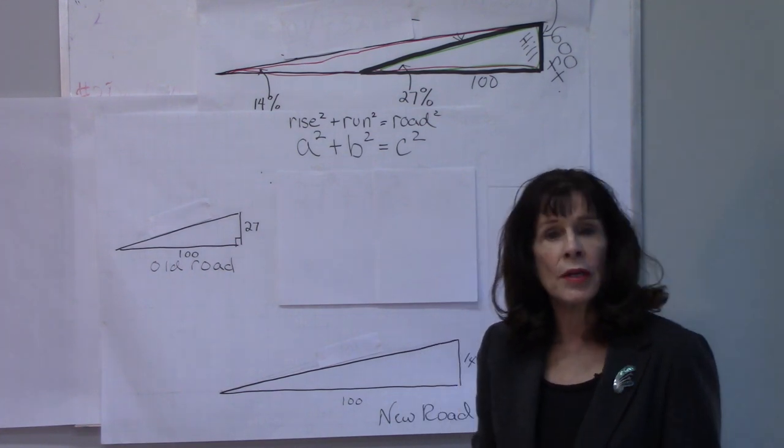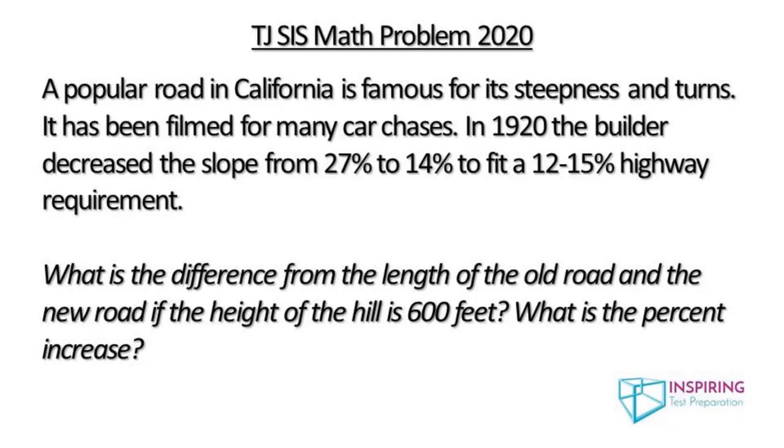This year's math prompt was the following: A popular road in California is famous for its steepness and turns. It has been filmed for many car chases. In 1920, the builder decreased the slope from 27% to 14% to fit a 12 to 15% highway requirement. What is the difference between the length of the old road and the new road if the height of the hill is 600 feet? What is the percent increase?